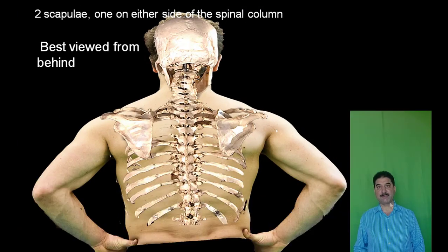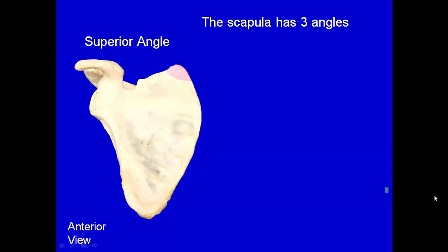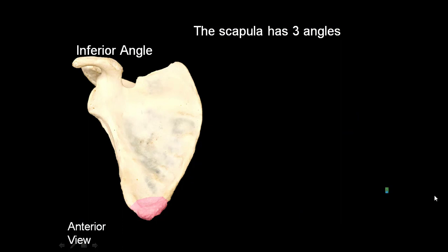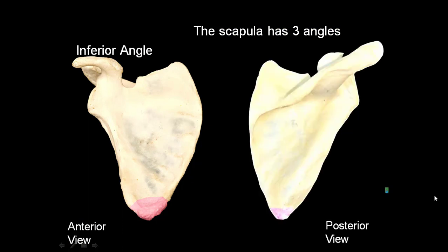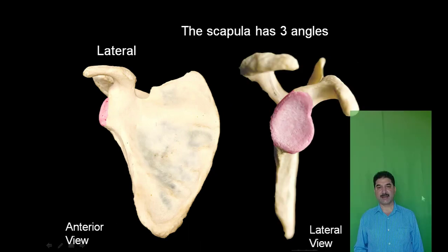Scapula has three angles: superior angle, inferior angle, and lateral angle. The lateral angle is also called the glenoid angle.